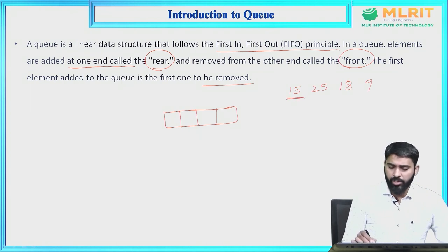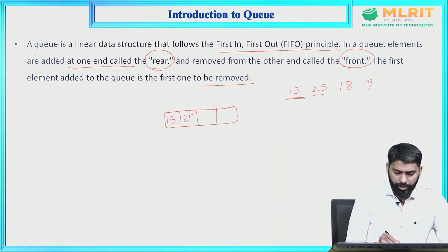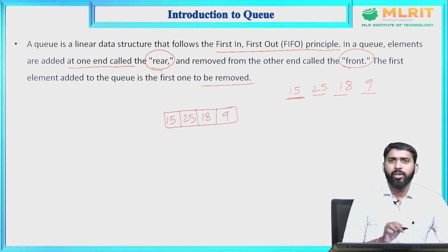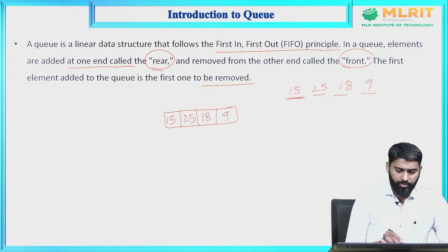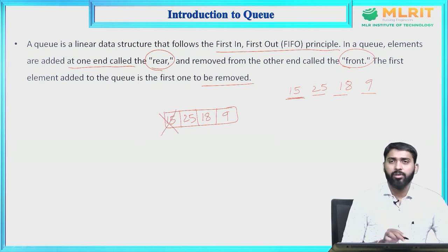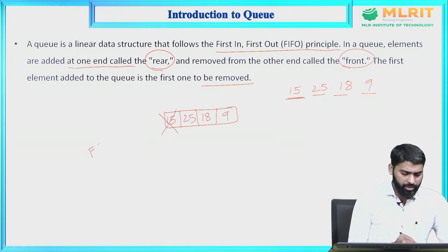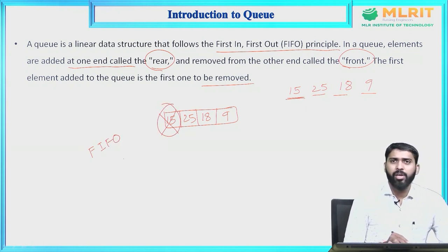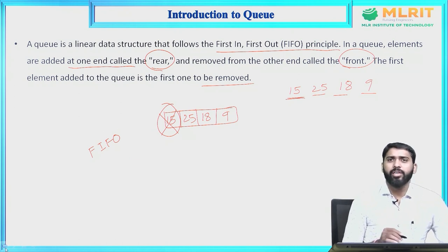The first element is 15, so I insert 15 first, then 25, then 18, then 9. Now if I try to delete an element from the queue, then 15 will be deleted first. Why? The queue property is first in first out, so the first inserted element will be first deleted. In our previous classes, we discussed in detail about queue. If you have any doubts about the queue data structure, refer those videos.